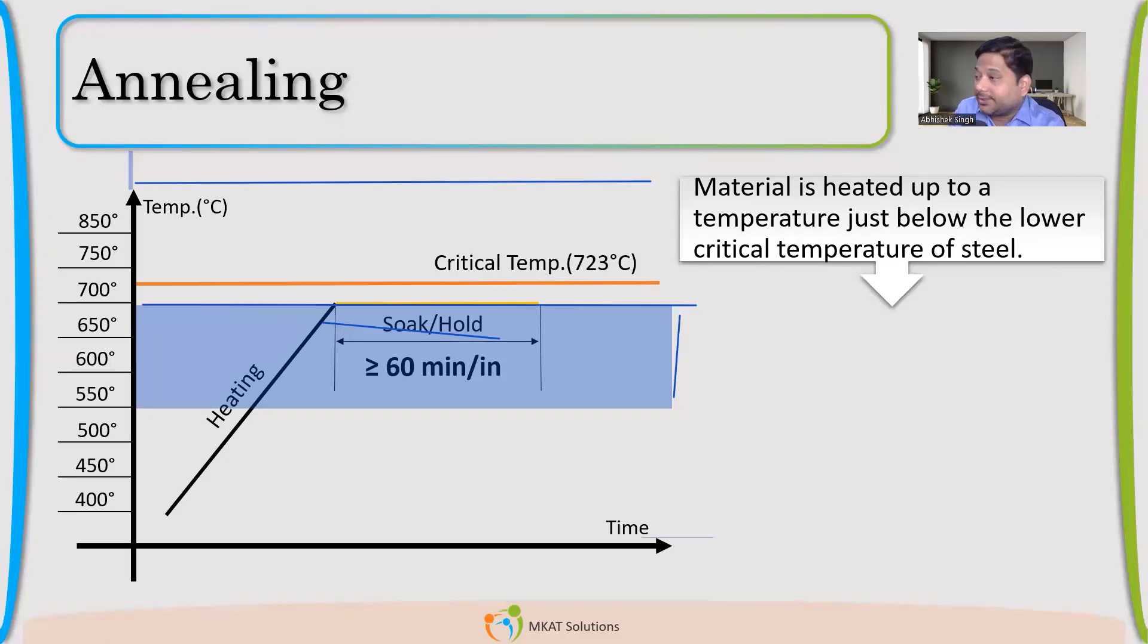We are well within the lower critical temperature. So the annealing process is below your lower critical temperature. That is what we have to remember. That lower critical temperature, which is at around 723 degrees Celsius. This annealing process which we do, it's below. So material property will not change drastically, but it will add lots of benefit. We'll see what benefits we are going to have.